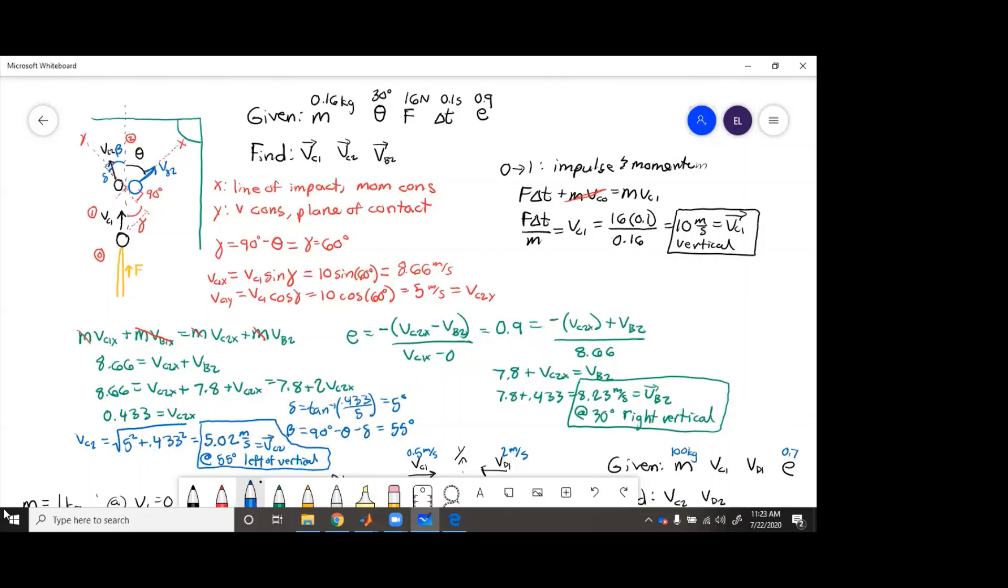And then we recognized that in the x direction, momentum is conserved. And then in the y direction, velocity was conserved. So the y direction was pretty easy, we just found that velocity from the vector component of vc1. And it's the same at vc2 in the y direction.